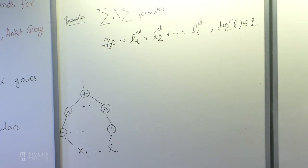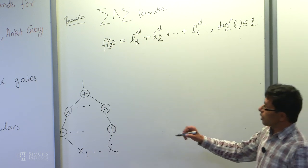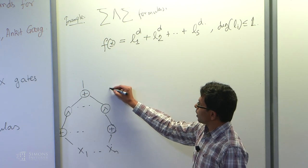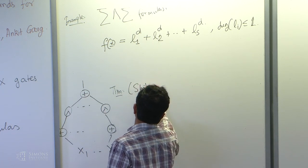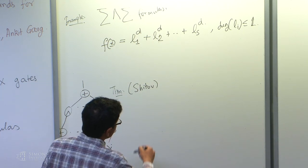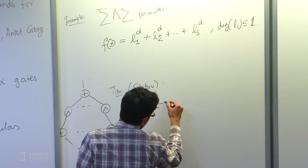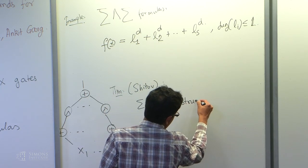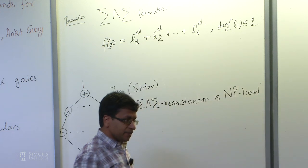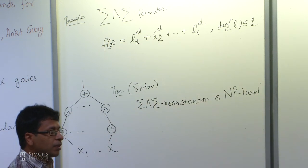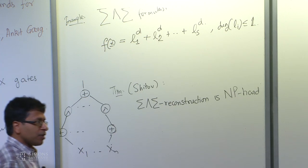When you ask for reconstruction in general, the problem becomes NP-hard. There is a theorem by Shitov, which builds on earlier work by Håstad, that finding the smallest formula in this class is NP-hard. In the worst case, just finding the smallest one is NP-hard. But in the reconstruction problem, you did not ask for the smallest one — the version where we ask for the smallest one is NP-hard.